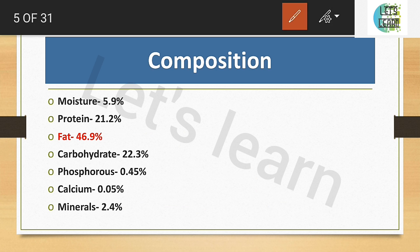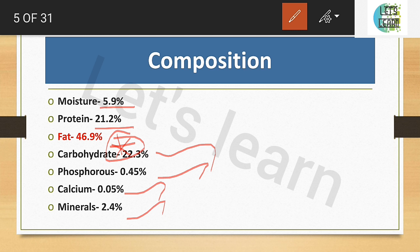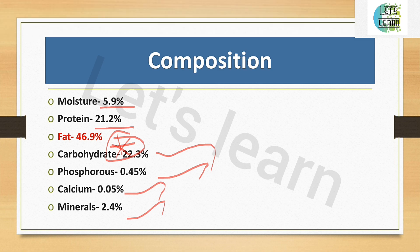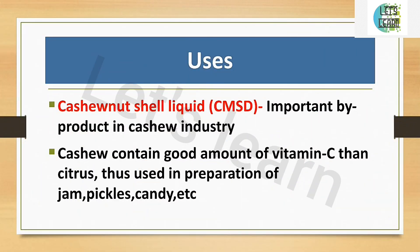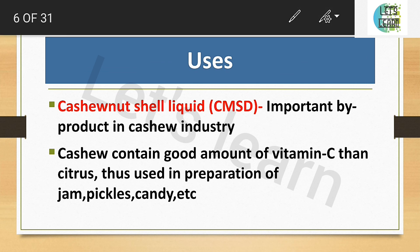Now we will see the composition of cashew — moisture, protein, and other nutrients. The moisture content is 5.9%, protein is 21.2%, fat is 46.9% (which is notably high), and carbohydrate is 22.3%. Phosphorus, calcium, and other minerals are also present. The main takeaway is that fat in cashew is 46.9%.